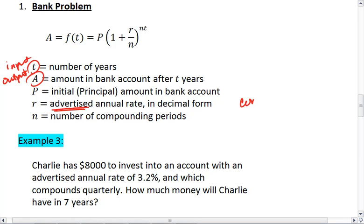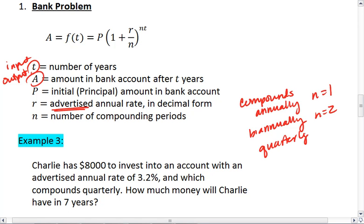If something compounds annually, then N equals 1, because it's compounding once a year. If we compound biannually, that is N equals 2. Quarterly is N equals 4. Monthly, N equals 12, because 12 months in a year. Daily, N equals 365. And hopefully you see the pattern.